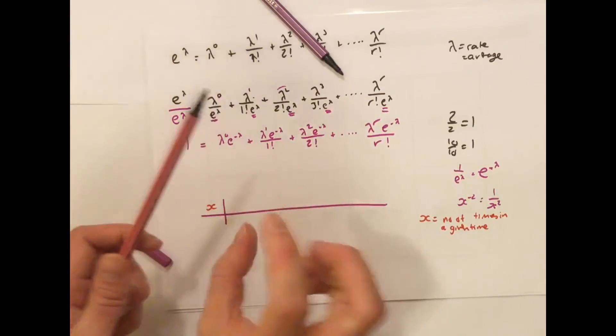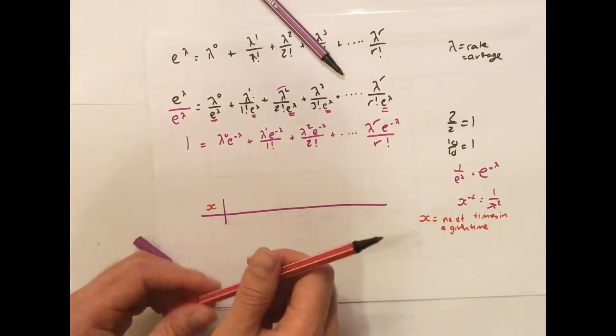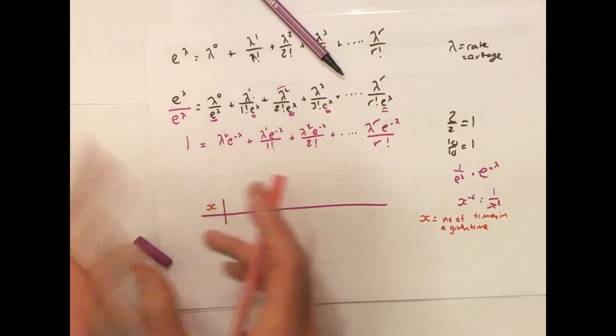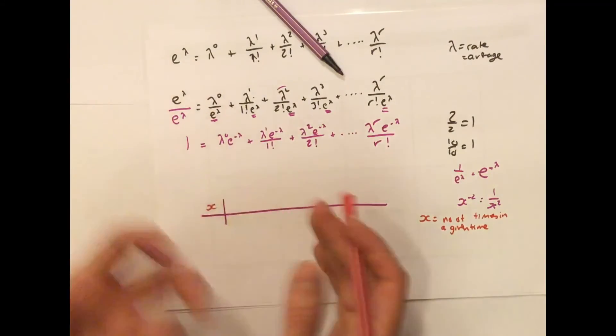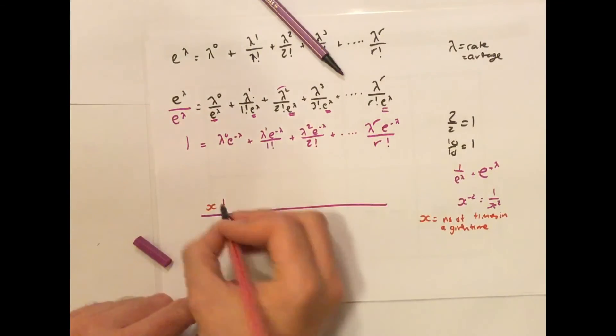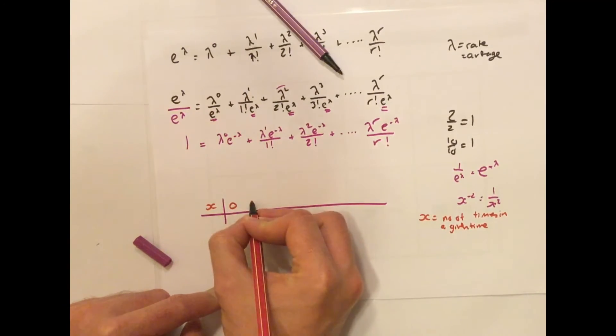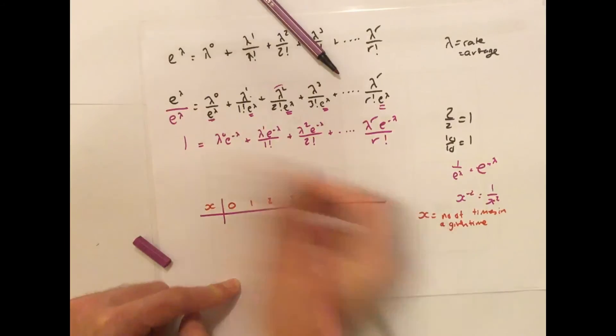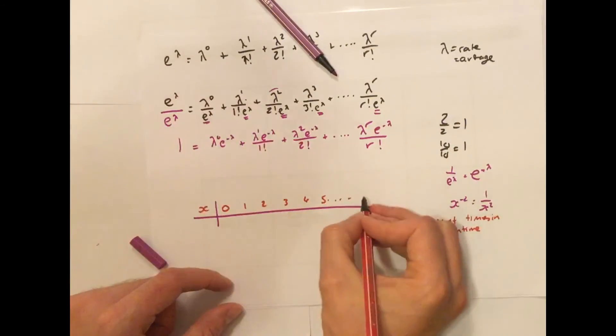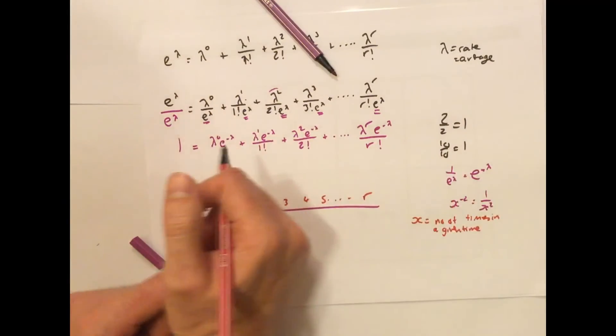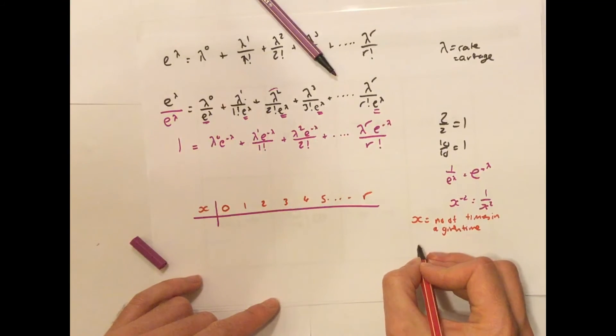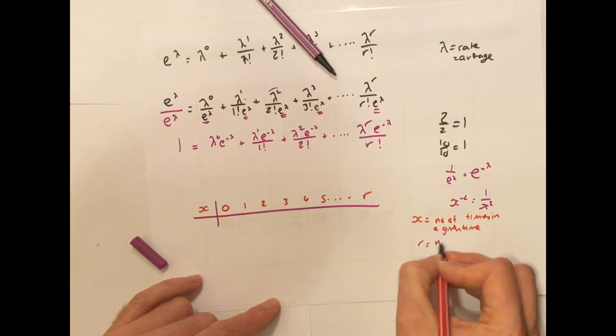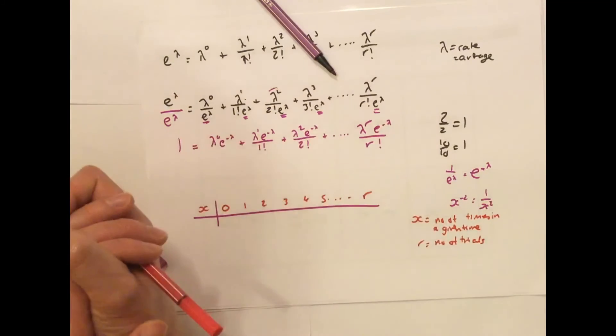So, for example, if you're looking at Zika viruses per day, it would be like 5 occurrences per day or 10 occurrences per day. Now, here you get 0 cases, 1 case, 2 cases, 3 cases, 4 cases, 5 cases, etc., up to r cases. So, r is your number of trials, if you like, which is technically infinite in the Poisson.